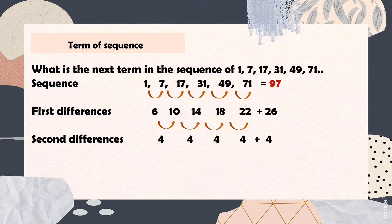So 26 plus 71 equals 97. Therefore, the next term in the sequence of 1, 7, 17, 31, 49, 71 is 97.